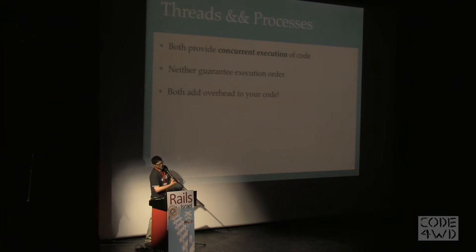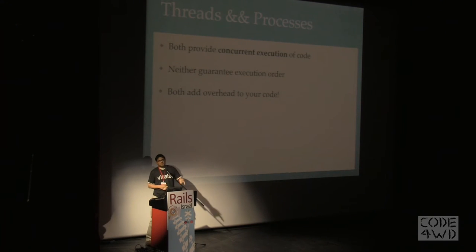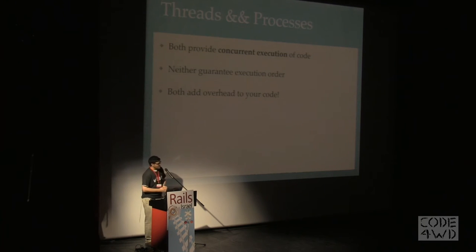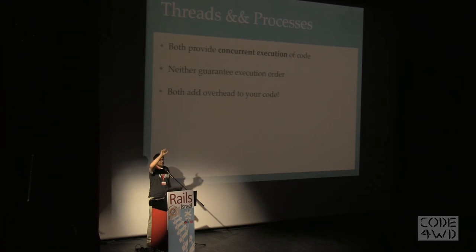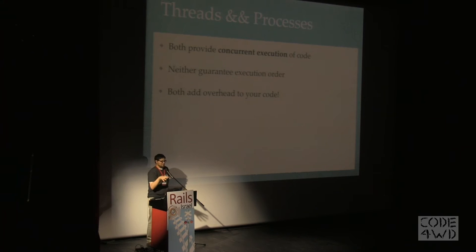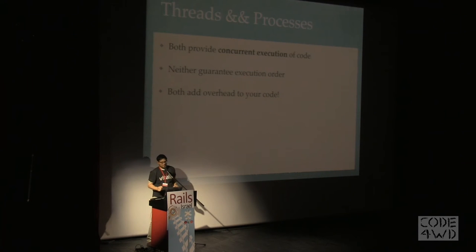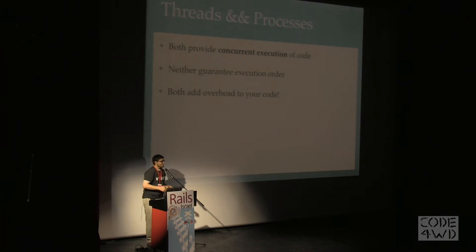Let's jump back to threads and processes. Here's what they have in common: both of them provide concurrent — not necessarily parallel, but always concurrent — execution of code. Neither guarantees execution order. Usually the way your code works, you have a little hand running through your code executing as it goes. With multiple threads or multiple processes, you have more than one hand running through your code, and it could be that one hand runs through a lot faster than the other.